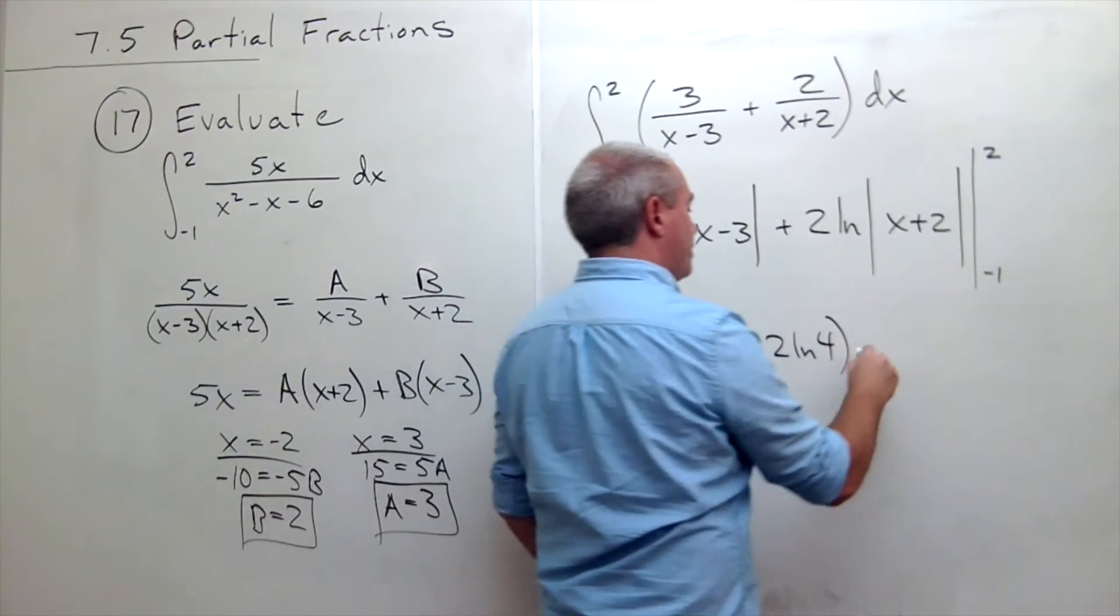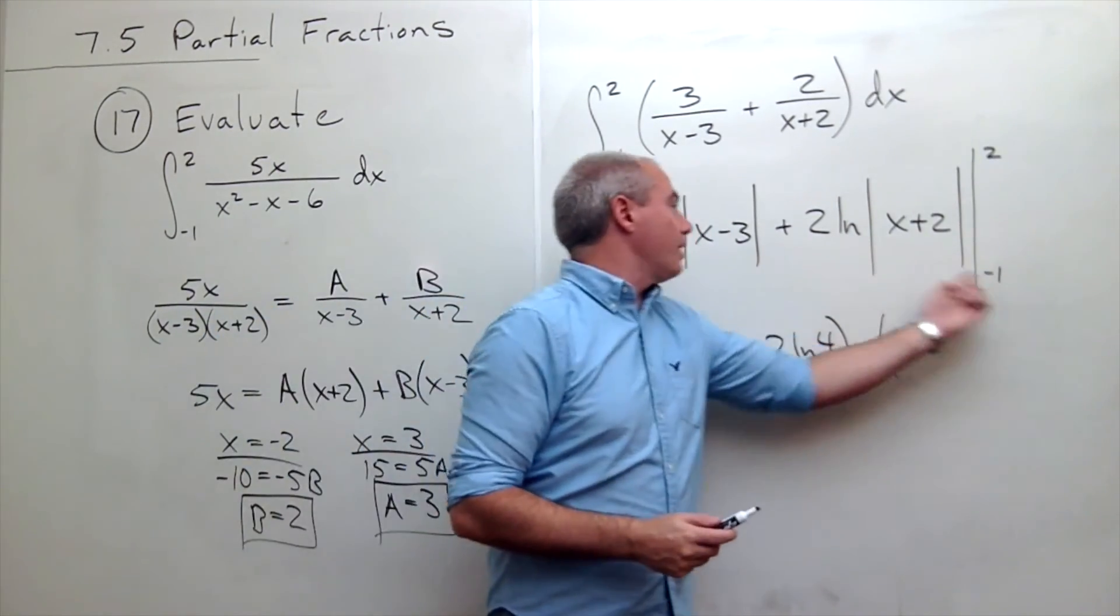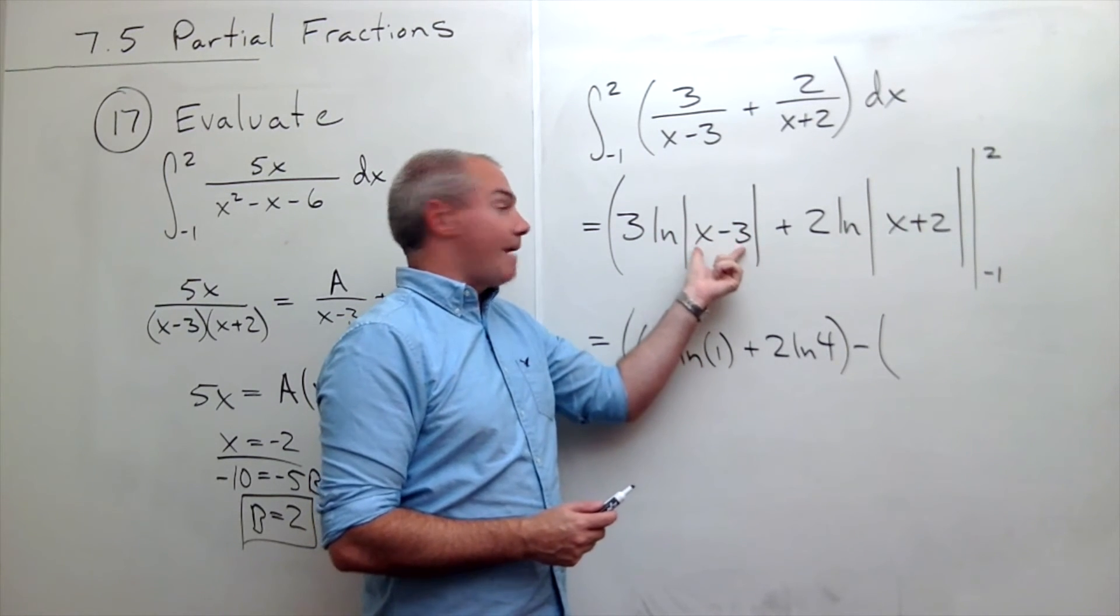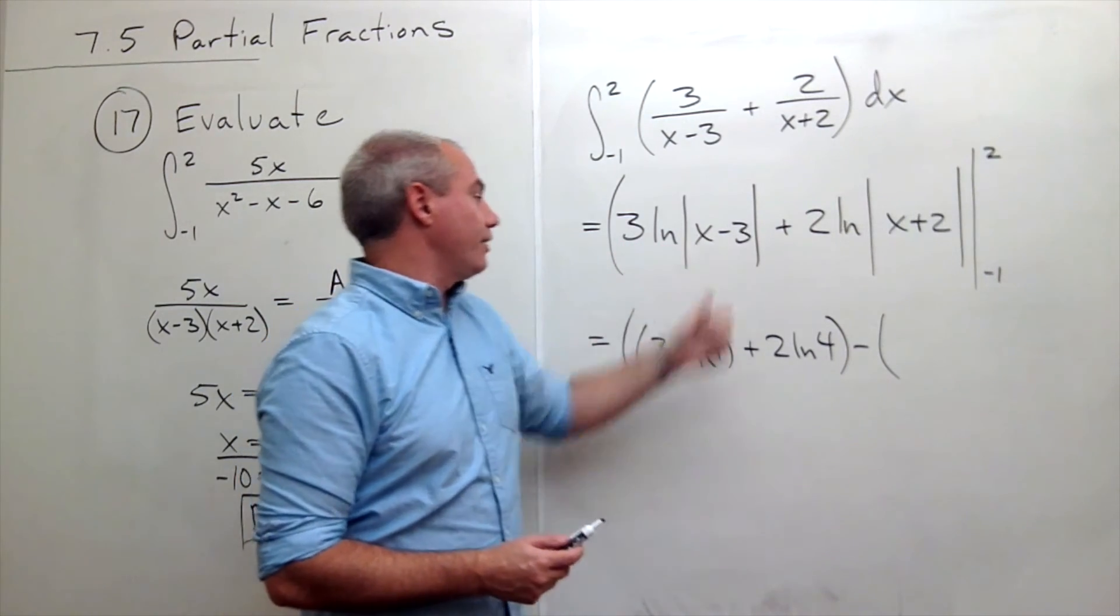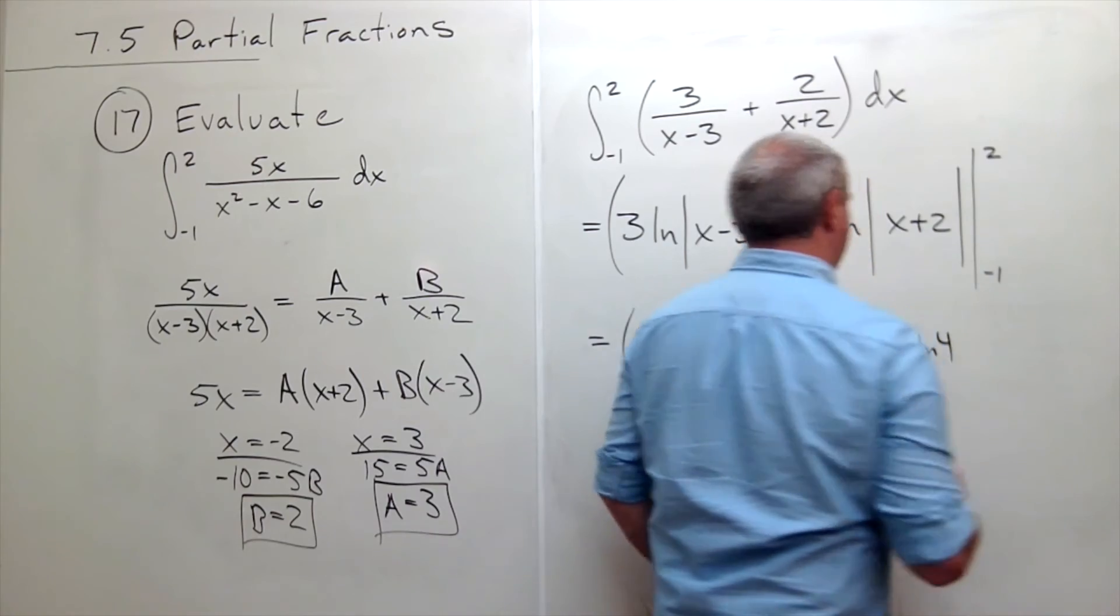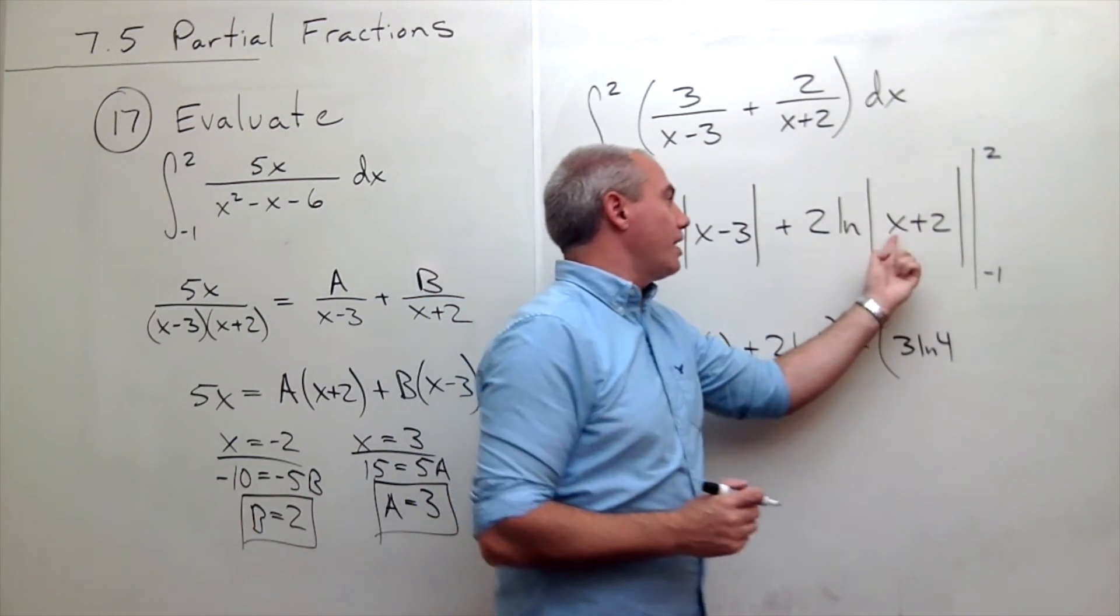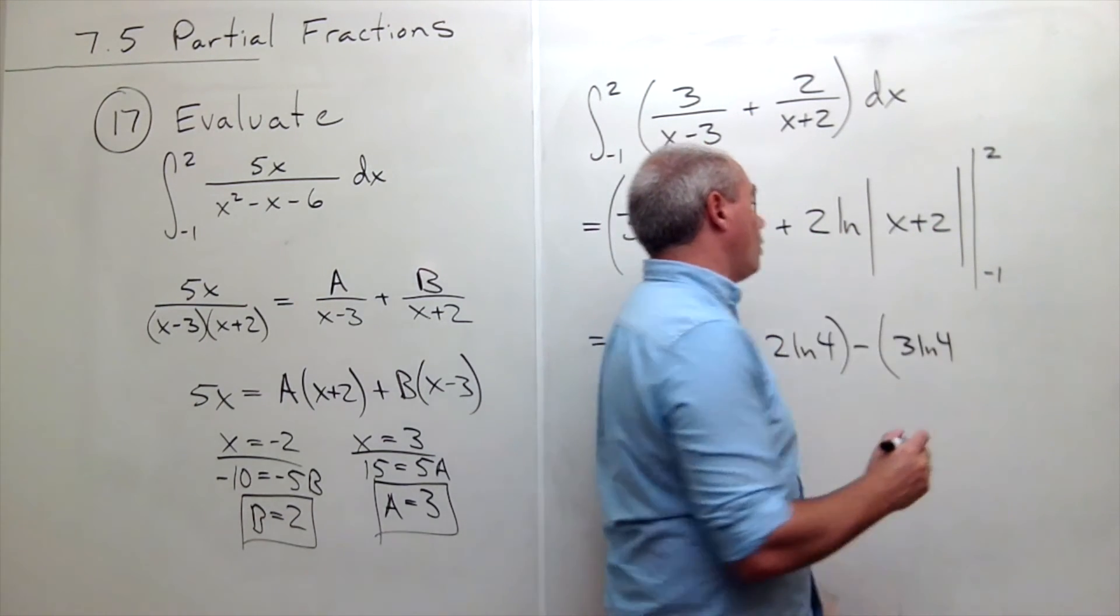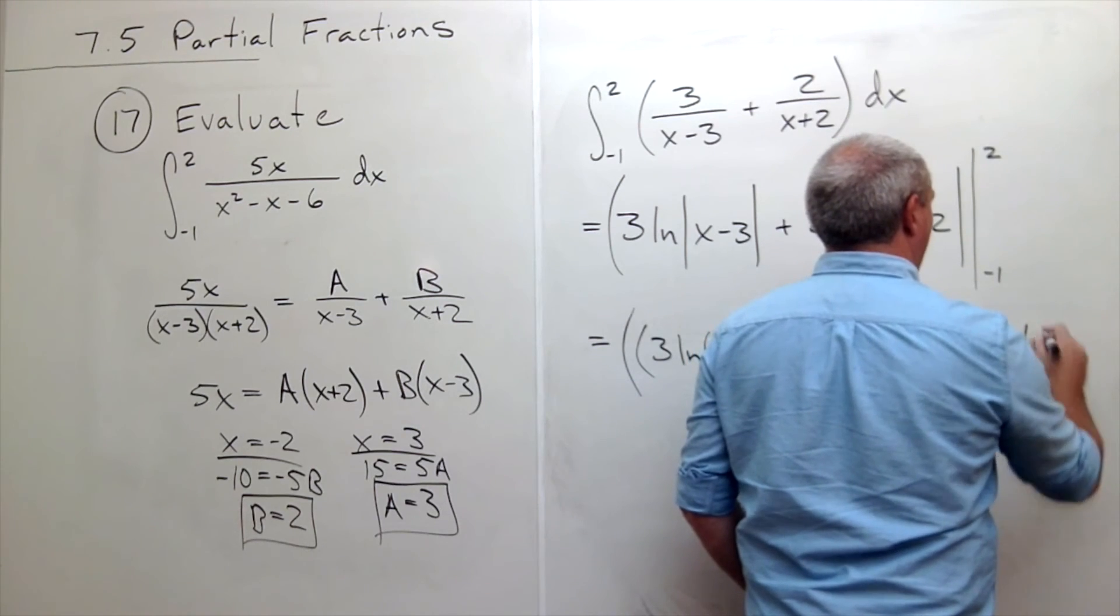All right, now we subtract, plugging in the minus 1. If I plug in minus 1, I get minus 1 minus 3, which is minus 4. Absolute value of minus 4 is 4. So I get 3 ln of 4. So 3 ln of 4. And then I get, if I plug in minus 1 here, I get minus 1 plus 2 is 1. I get 2 ln of 1 plus 2 ln of 1.